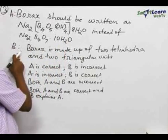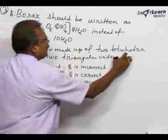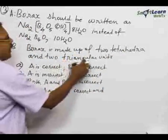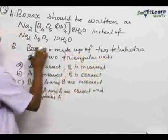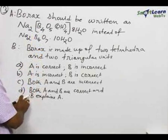And statement B, borax is made of two tetrahedra and two triangular units. And if this B explains A correctly, then only we have to go for option D.